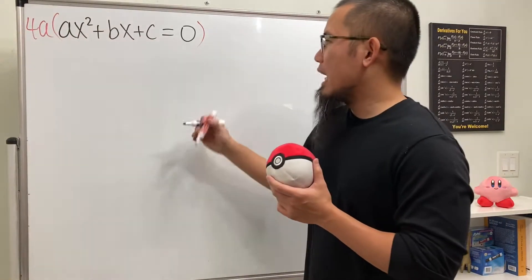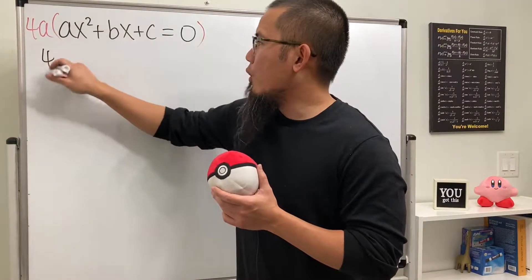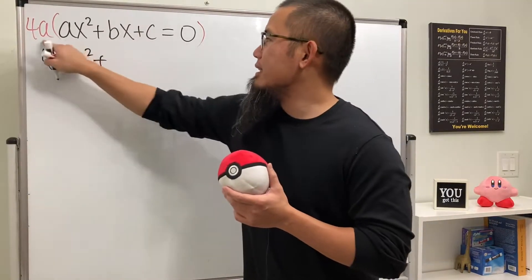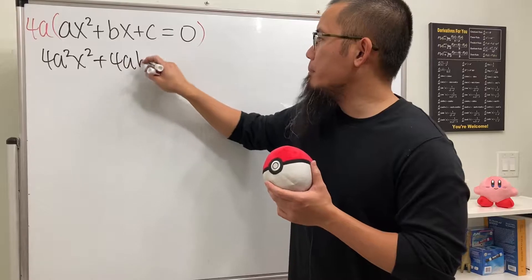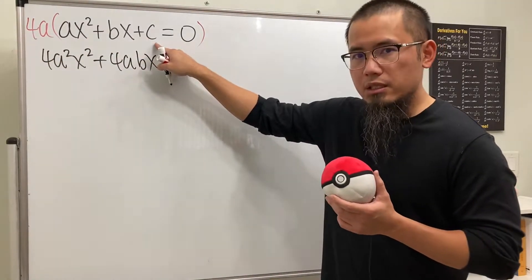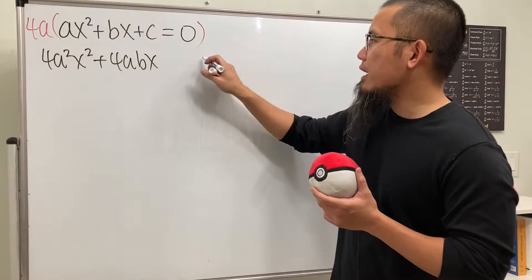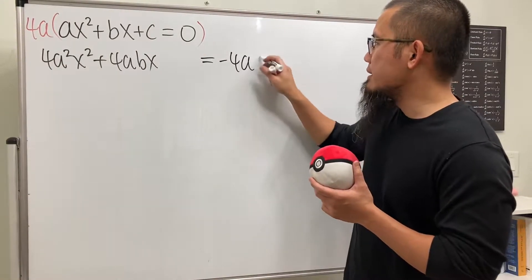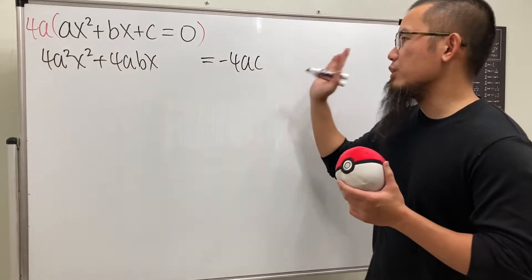Check this out. Let's multiply everything out. We get 4a²x², and then plus this times that, we get 4abx. And this times that is 4ac. But let's put that to the right-hand side and then leave a space here. And then this becomes negative 4ac. And of course, this times 0 is just 0, so it doesn't matter.